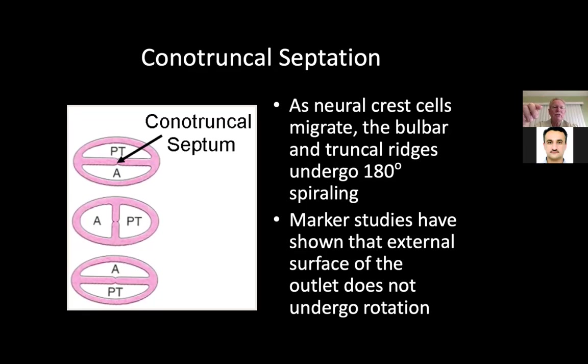You see the aorta and the pulmonary trunk start out in one direction, and then they have to spiral completely — the aorta initially is a little anterior, and then as you keep going up, it rotates leftward and eventually gets posterior to the pulmonary trunk.